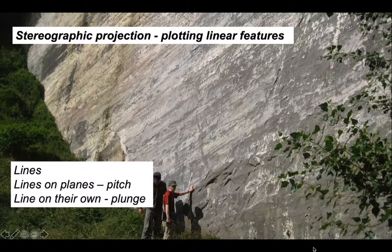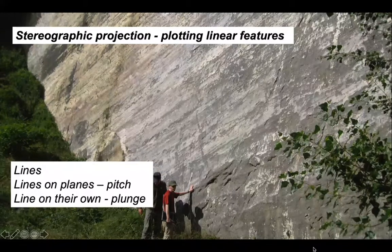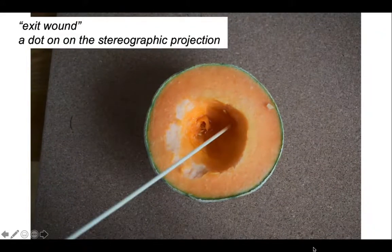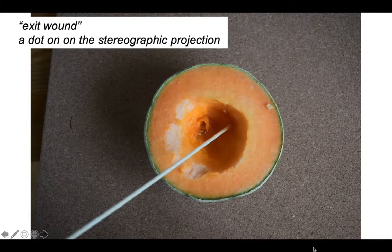We're going to look at how we plot lines on stereographic projections, using two methods: lines that exist on planes, and lines that occur on their own. We can use different methods both to record and to plot them. In a lower hemisphere melon visualization, a line is represented by a skewer that makes an exit wound — a dot — on the skin of the melon. So lines in the 3D world plot as dots on the stereographic projection.